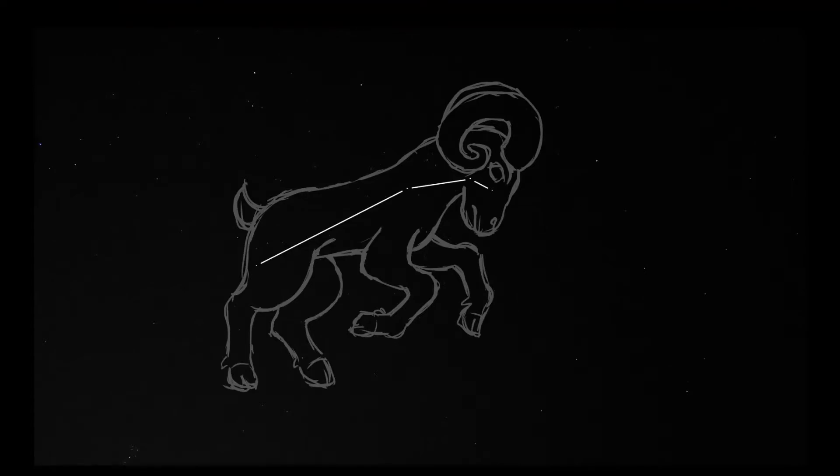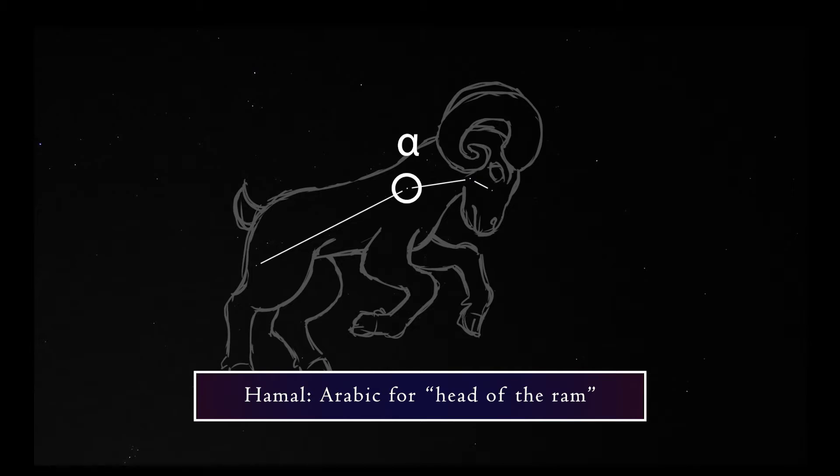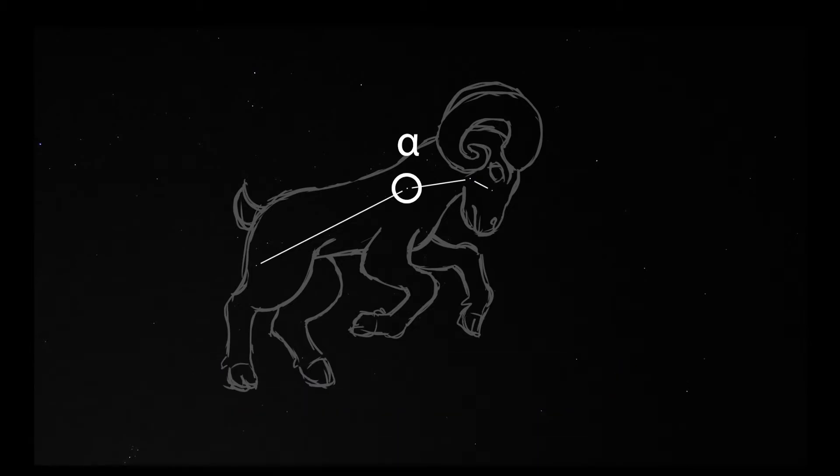The two brightest and easiest to see stars in Aries are Alpha and Beta Ariadis. Alpha Ariadis is also called Hamal, meaning head of the ram. It is the brightest star in this constellation with a visual magnitude of about two. It is about 65.8 light years away and is thought to have an exoplanet that is almost two times the mass of Jupiter.